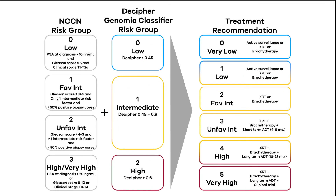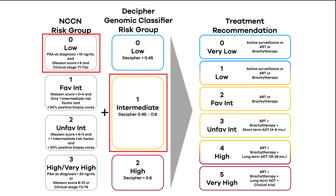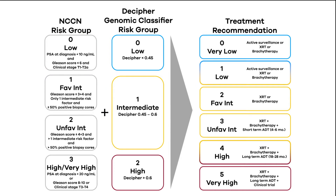Patients who have low-risk disease and an intermediate-risk Decipher score, we would give them monotherapy — either radiation alone or brachytherapy. But again, many of those are also candidates for active surveillance.